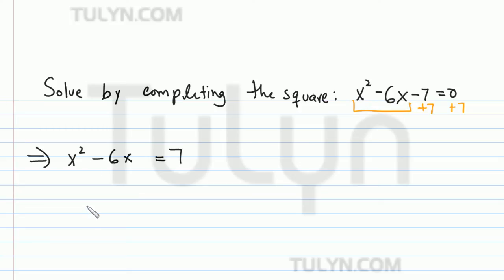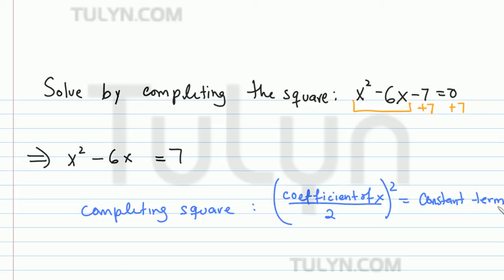So now for completing the square, recall: we have to take the coefficient of x, divide that by 2, and then square the result. And that will give us the constant term in a perfect square trinomial.